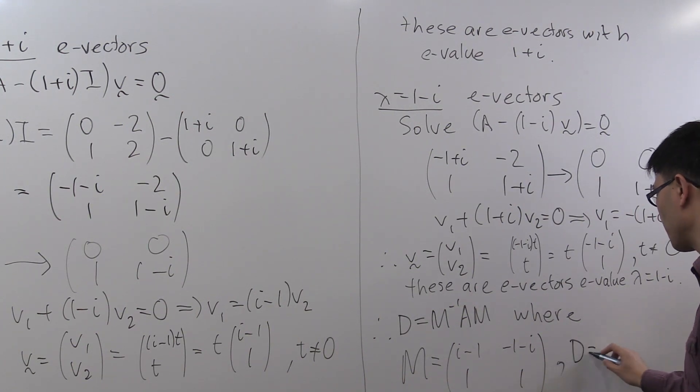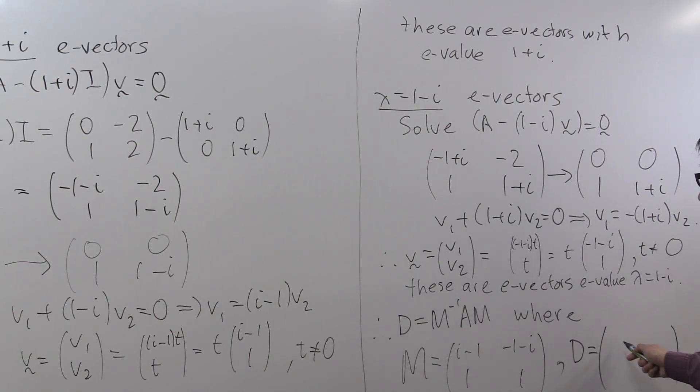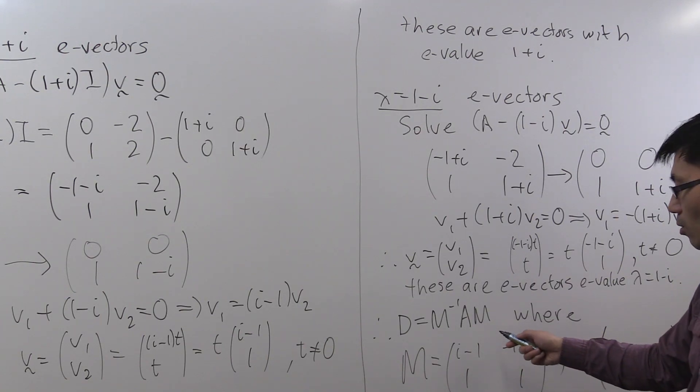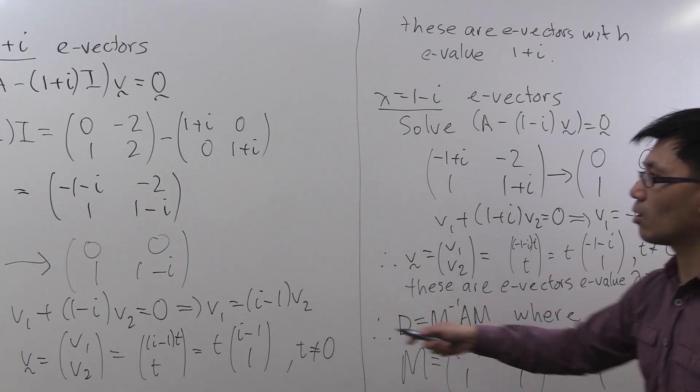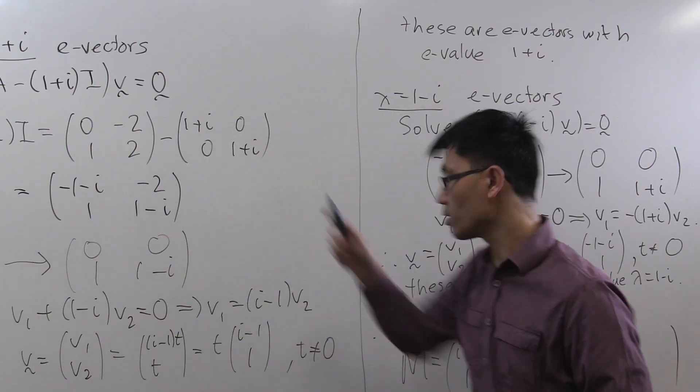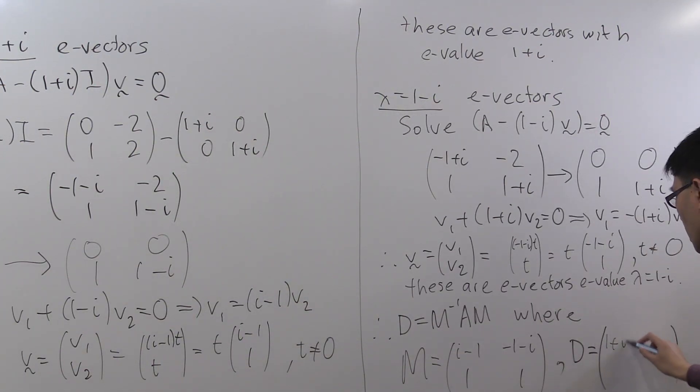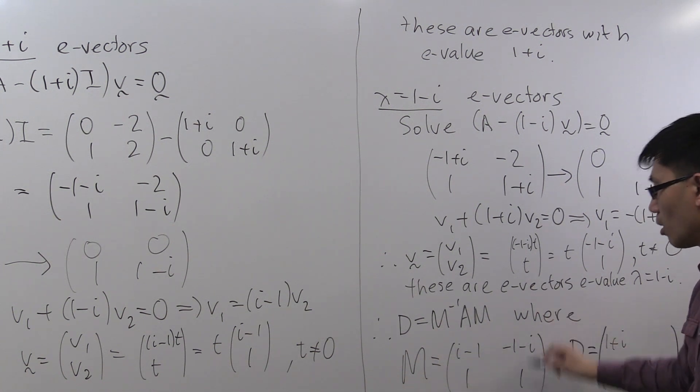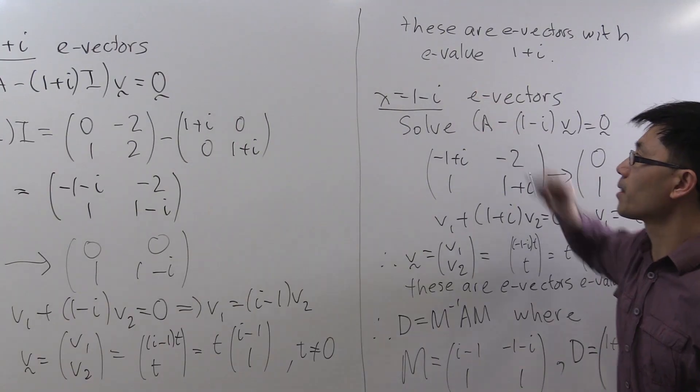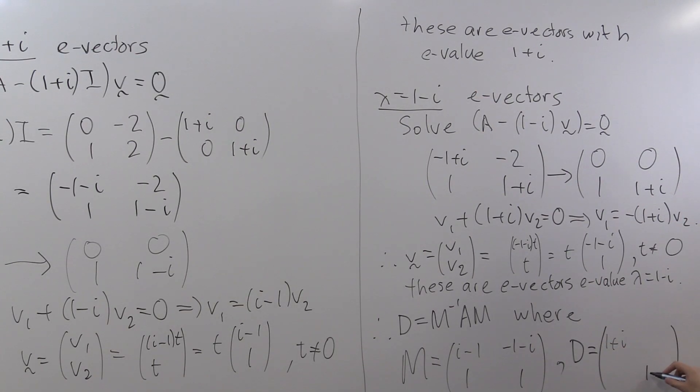And what's the D? The D is just the diagonal matrix of eigenvalues, and you have to pick them in the corresponding order. So in this case here, this was an eigenvector with eigenvalue lambda equals 1 plus i, so we need to put a 1 plus i in the first diagonal entry here. And the second column, which has eigenvalue 1 minus i, means that we have to put 1 minus i as the second entry in this diagonal matrix. And you can check that M inverse AM is indeed this diagonal matrix just by multiplying it out. And that finishes this question.